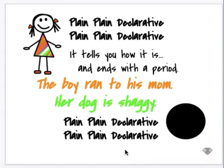A declarative sentence is plain and boring. It just tells you how it is. Like for example, I play basketball. I'm just telling you something about myself. It's not exciting. My sentence sounds plain — I have a naming part and an action part. It's just boring. At the end of those boring sentences, we use the period.